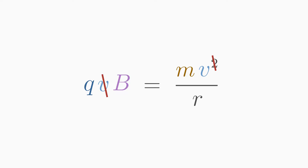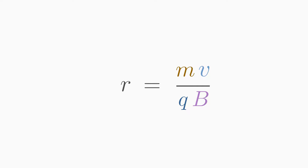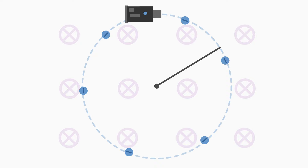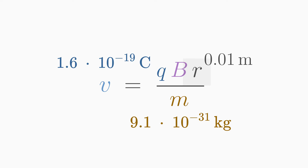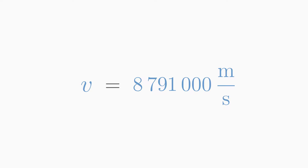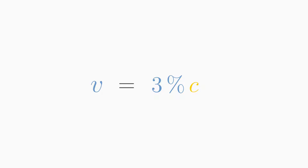We can cancel the velocity v one time on both sides, giving a formula to determine the radius r of the circular path. We can easily measure the radius in a teltron tube experiment, but finding the velocity v of the electron is much harder — the derived formula is perfectly suitable for this purpose. Rearranging for velocity v: if we measure a radius of 1 centimeter (0.01 m) and set a magnetic field of 5 millitesla, we get a speed of approximately 8,791,000 meters per second — the electron moves on a circular path with almost 3% of the speed of light.